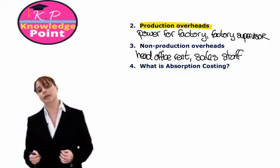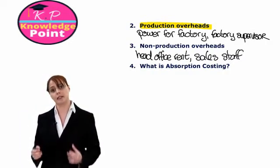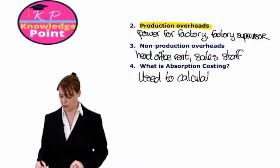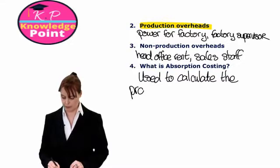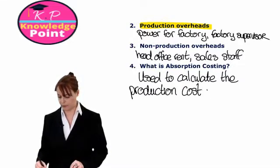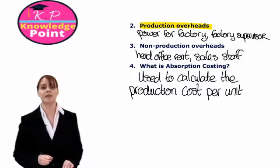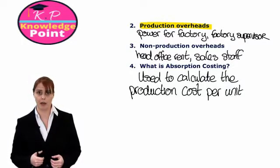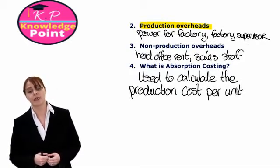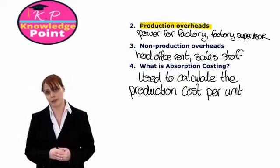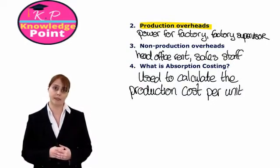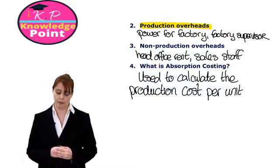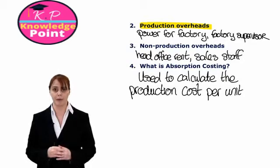And what we are really doing in an absorption costing system is finding some way to calculate the full total production cost per unit. And the reason we want to do this is because it's very important for all companies to have some idea of how much it costs them to produce each unit of their product. An obvious reason for this is that we need to know how much it costs to produce our unit, so that we can calculate what our selling price is going to be. So how much are we going to charge our customers for this product. In absorption costing, we will get to the point where we have calculated our production cost per unit.